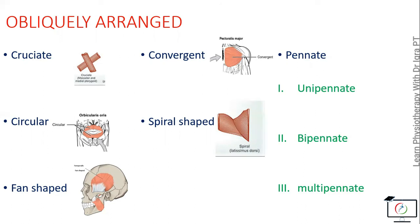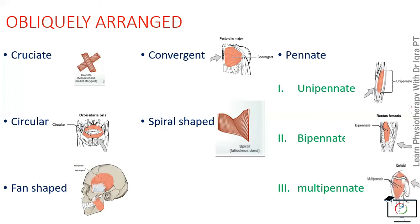Pinnate means feather shape. They can be unipinnate, or the half feather, for example the posterior tibialis; or bipinnate, the complete feather, for example the rectus femoris; and multipinnate, which as the name indicates has more than two pinnates, for example the deltoid muscle.